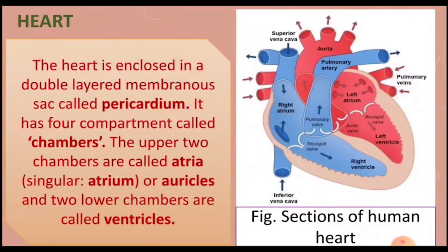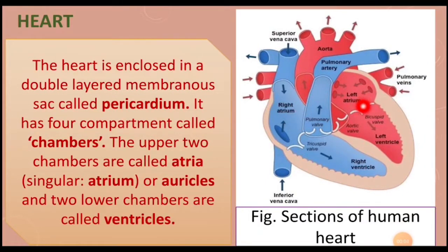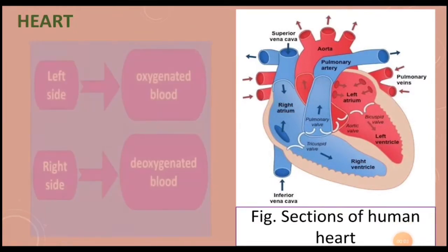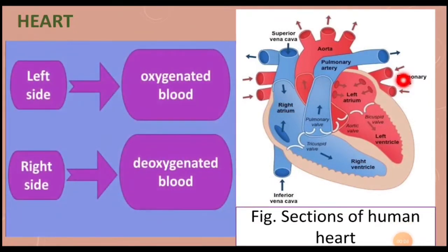The heart is enclosed in a double-layered membrane sac called the pericardium. The heart has four compartments called chambers. The upper two chambers are called atria (singular: atrium) or auricles, and the two lower chambers are called ventricles.